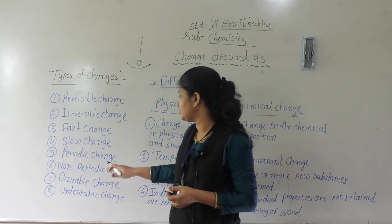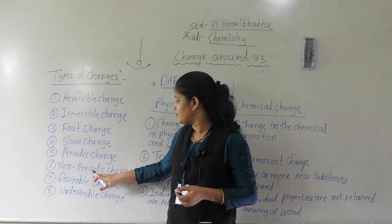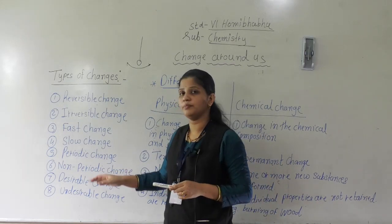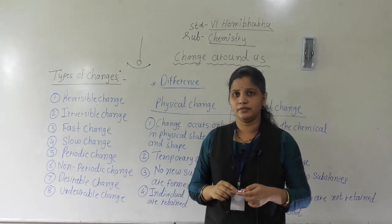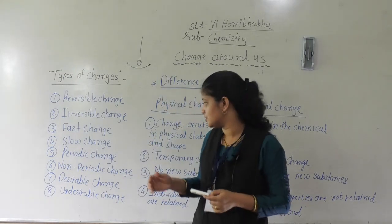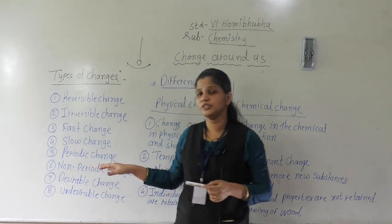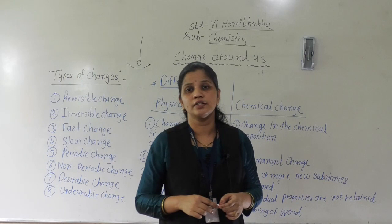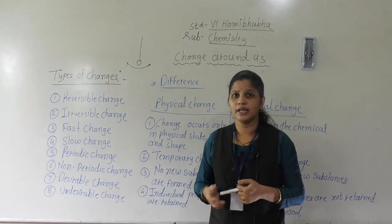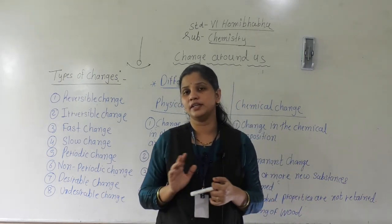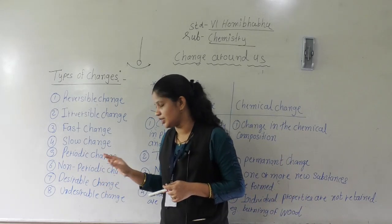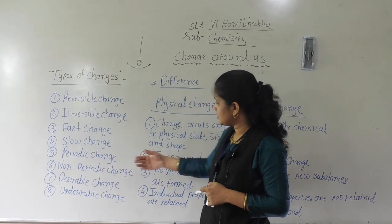Non-periodic change means we don't know when it will occur and it does not repeat. Those changes are called non-periodic changes. Examples include the Nisarga cyclone, earthquakes, and other natural disasters — all these are examples of non-periodic change.